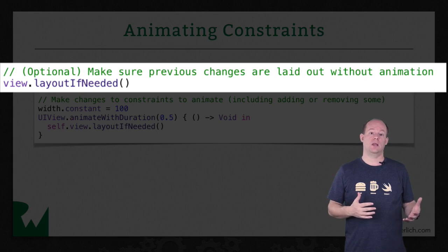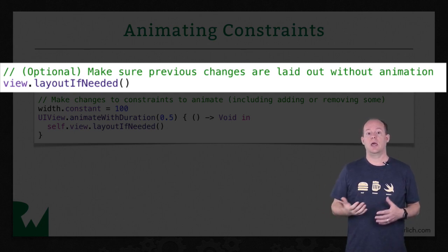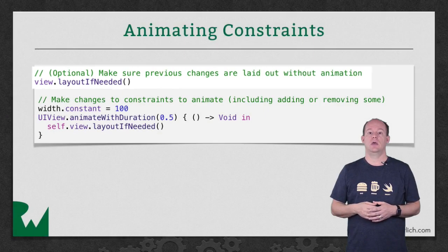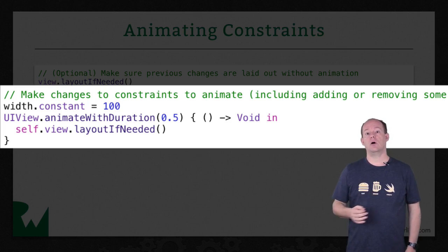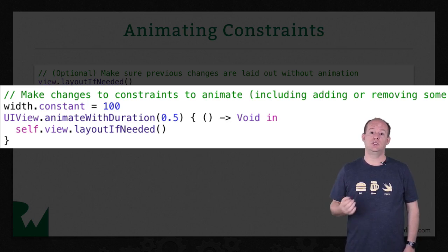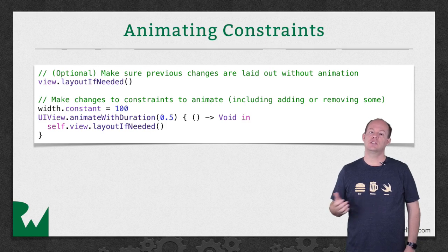The first is before we animate the changes. If we're making several changes to the layout but we only want to animate some of them, first we make the changes we don't want to animate and call Layout If Needed. This causes the layout to synchronize the update and reflect the changed constraints. Then we make the changes we want to animate and call Layout If Needed inside an animation block. Remember, for constraints that have already been installed, you can only change the constant. But you can activate and deactivate constraints too before calling Layout If Needed. That's it — the views impacted by the changed constraints will update to their new layout, and it will all be nicely animated.